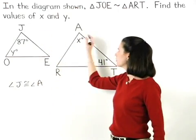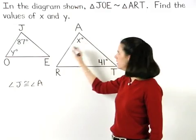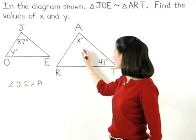And if angle J is congruent to angle A, then 87 equals x.